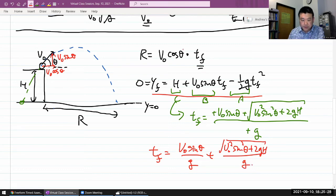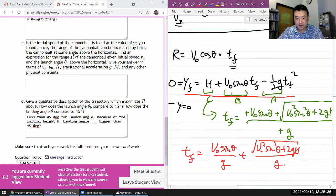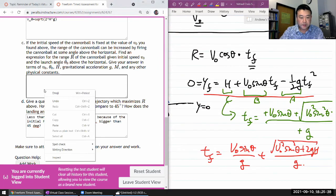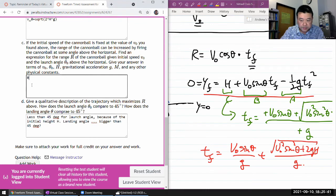Plug that in there, that gets you the R. Let me just type that in, I don't think it really simplifies from there anyway, so I'm just going to type that in so that I can get an answer in within the time limit. The expression for range is V naught times cosine theta, times V naught times sine theta divided by G, plus square root of V naught squared sine squared theta plus 2G H divided by G. I think that's it.